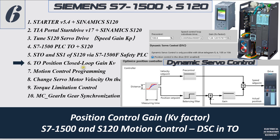How can we set the closed loop gain parameter — that's the KV in the TO — when we do the TO commissioning. As shown in this picture, in the TO technology object, when we tune the gain from the commissioning panel, that is the parameter we will adjust. Basically we will use the trace curve to monitor the set point position and the feedback position. Tuning the positioning gain is highly application-oriented.